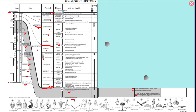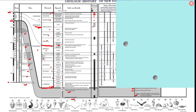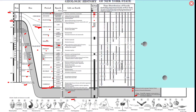The next section shows how much of the rock record we have for each time period in New York State. If the box takes up the full width, we have the full rock record. For example, for the Neogene and Paleogene we have none, while for others we have a partial rock record.